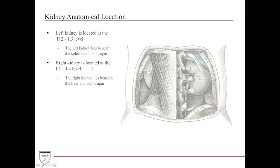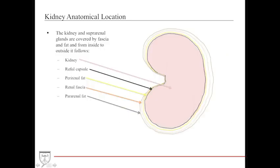Because of the liver in the right upper quadrant, the left kidney is located around T12 to L3, while the right kidney is around L1 to L4. The structures surrounding the kidneys are often tested — they're composed of the renal capsule, then the perirenal fat, the renal fascia, and the pararenal fat. These structures provide protection for the kidney.